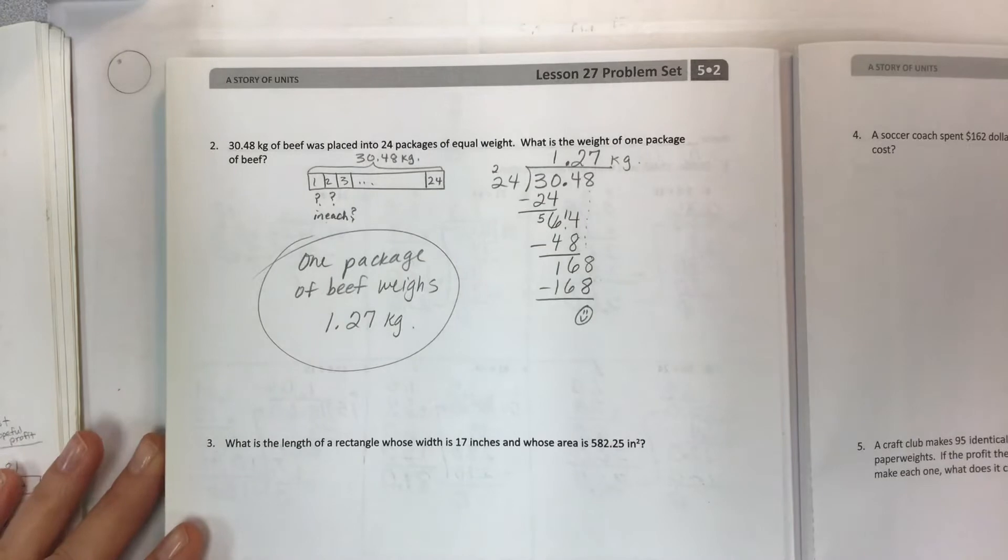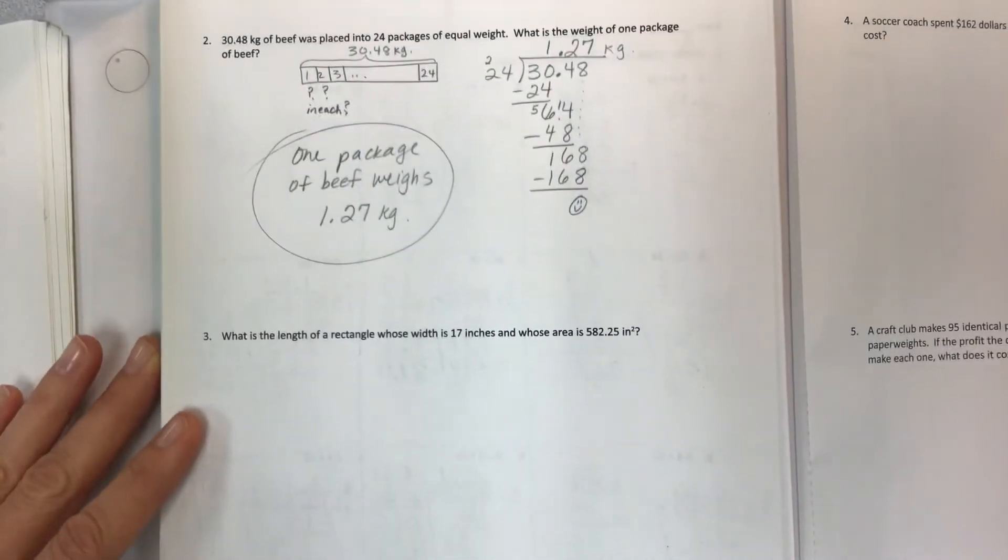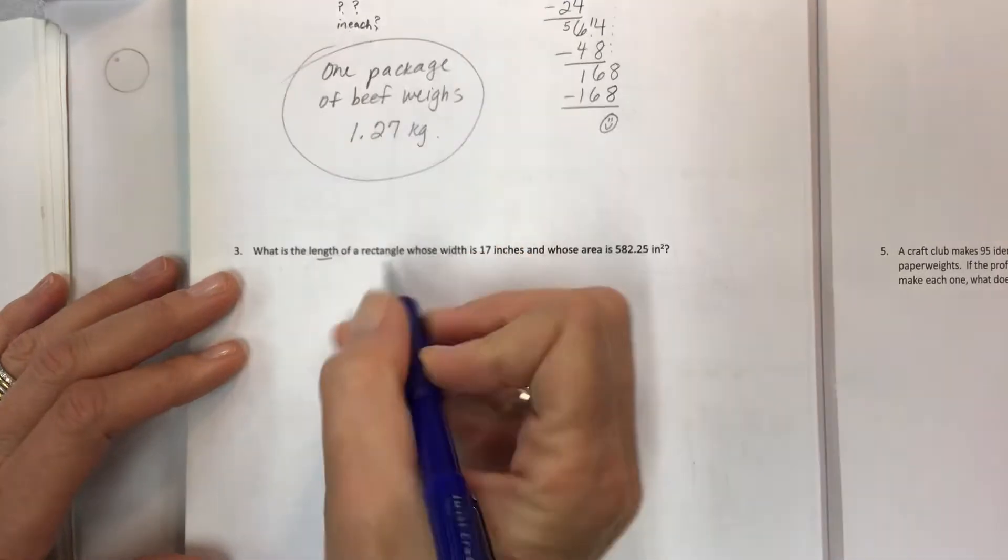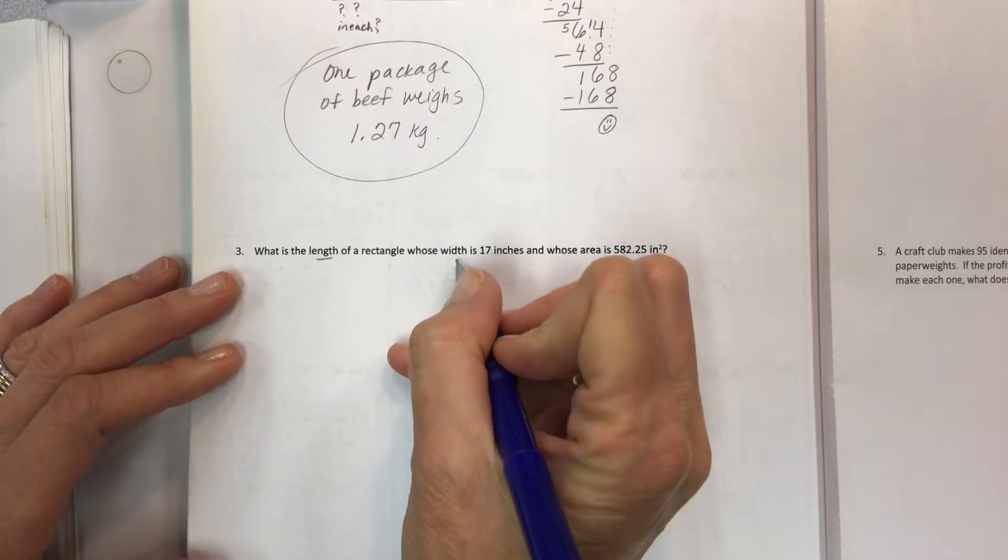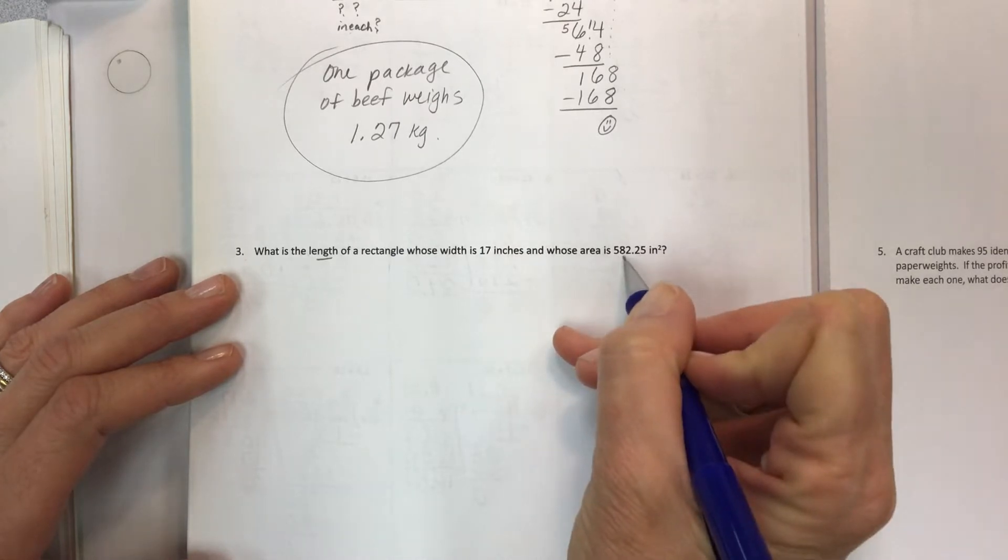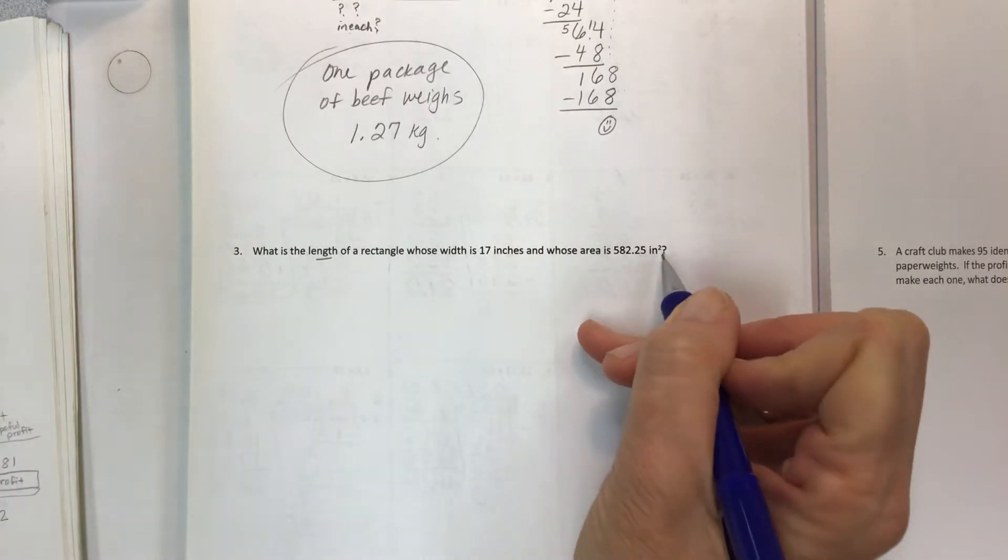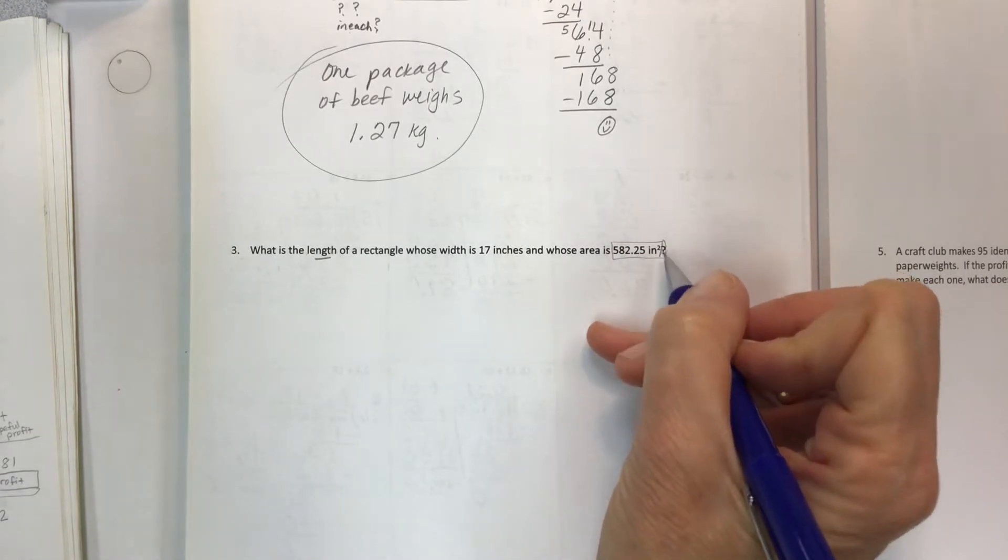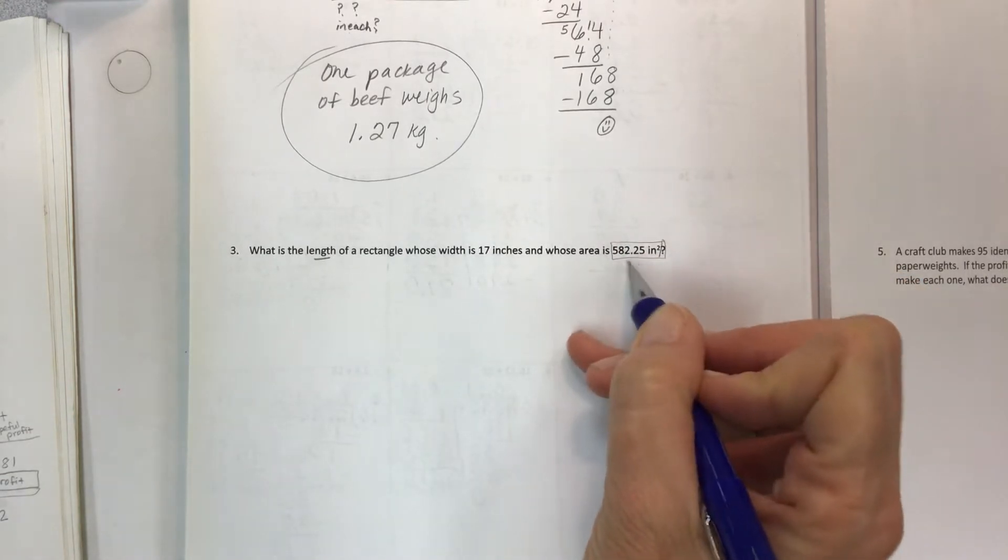So what is the weight of one package of beef? One package of beef weighs 1.27, which is 1 and 27 hundredths kilograms. There's your answer.